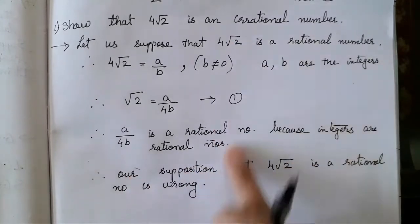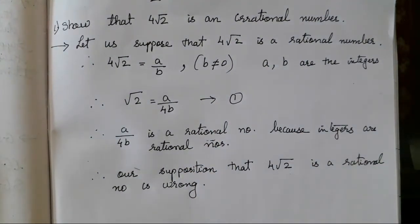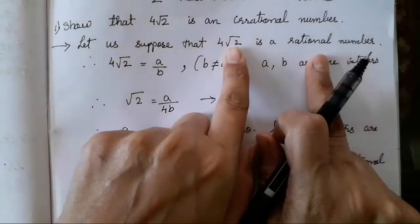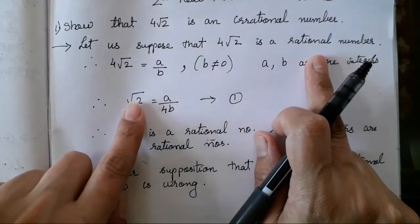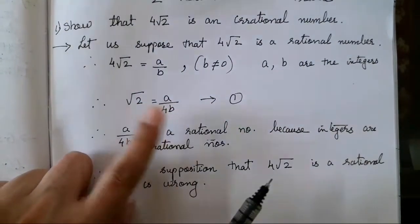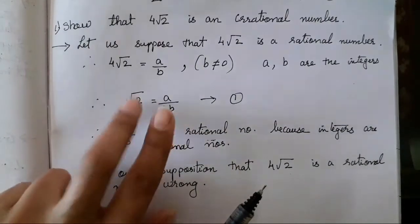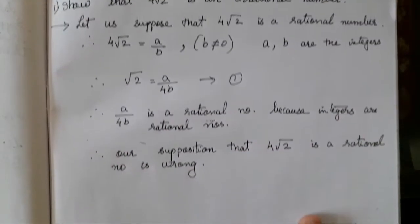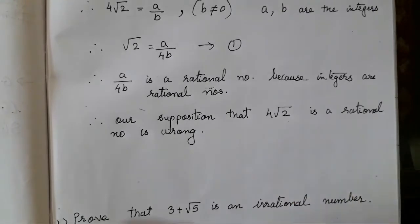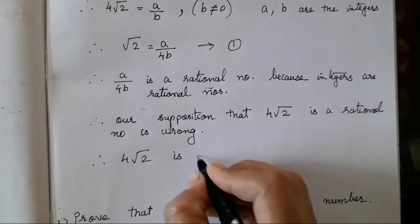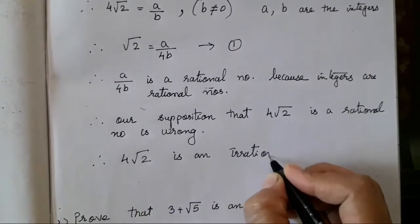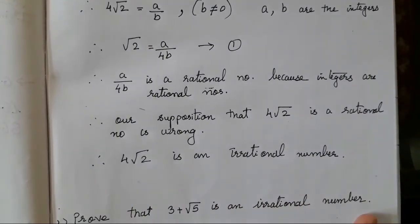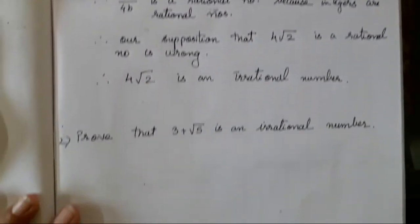Children, you all have to understand this and write it on your own. This can change according to the teacher. What we assumed was that 4√2 is a rational number, but on the left hand side there is an irrational number and on the right hand side it's a rational number — irrational and rational are opposite. So the supposition is wrong, and therefore 4√2 is an irrational number. We just use the properties of irrational numbers and write it this way.